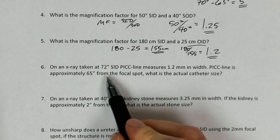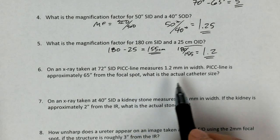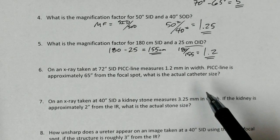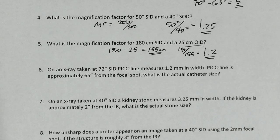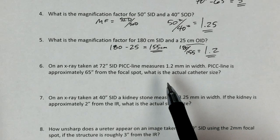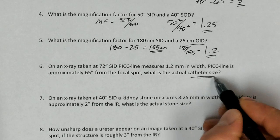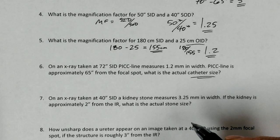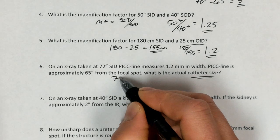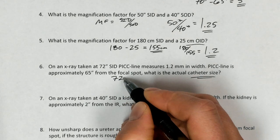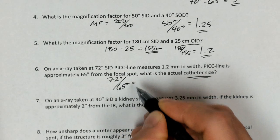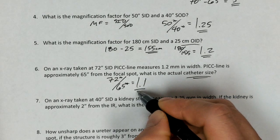On an x-ray taken at a 72-inch SID, the PICC line measures 1.2 millimeters in width. PICC line is approximately 65 inches from the focal spot. What is the actual catheter size? So, in this instance, we're going to need to calculate a magnification factor and then apply it to figure out the actual object size based on the image size. So we'll need to do some division twice. The first set of division we'll do will be to calculate what the magnification factor is. So it's 72 inches over 65 inches, and this will give us the magnification factor. The inches cancel out to give us 1.1 magnification factor.